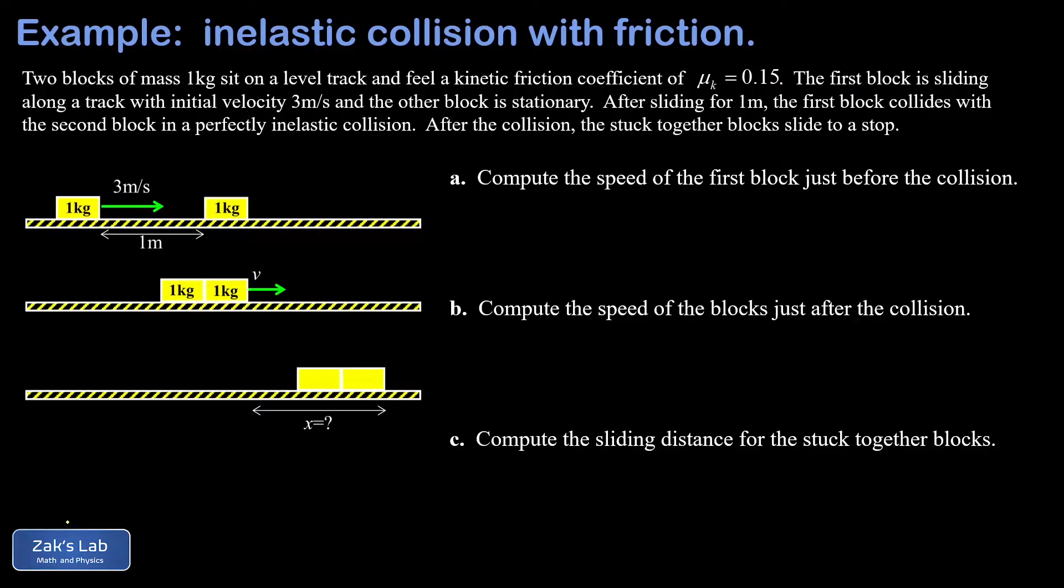In this video, we're looking at an inelastic collision between two identical blocks. One of them is initially stationary, but this collision is complicated by the fact that we have a rough surface and we have a kinetic friction coefficient given to us. Throughout the entire process, that's going to be 0.15.